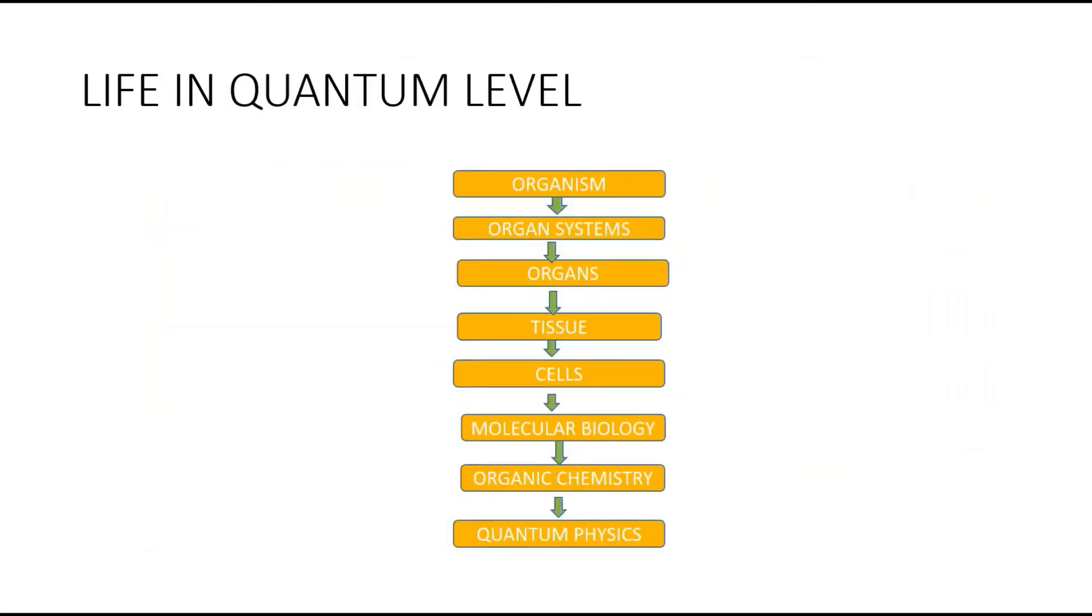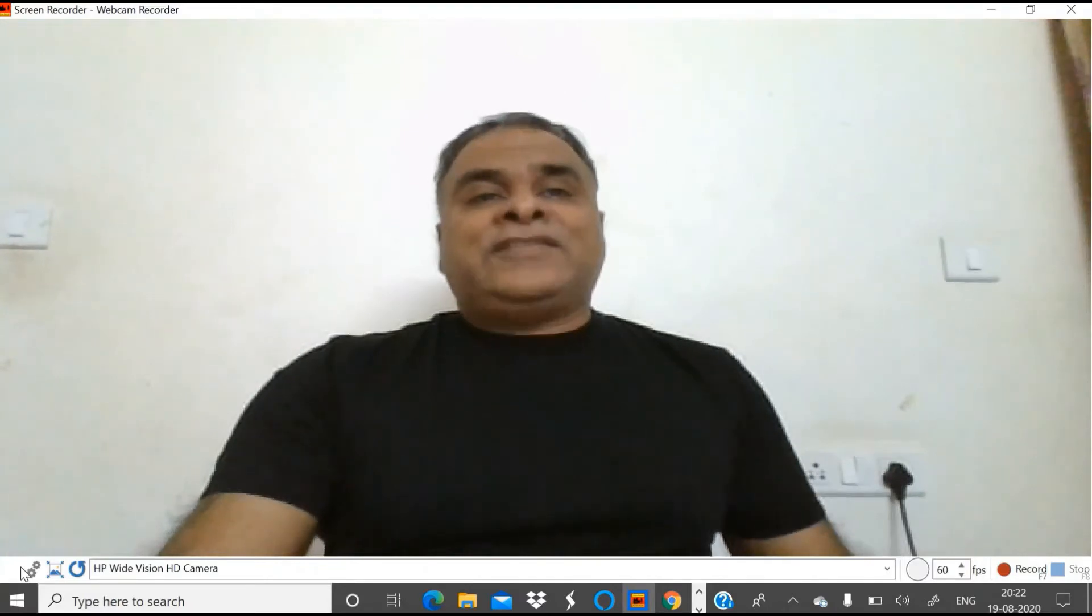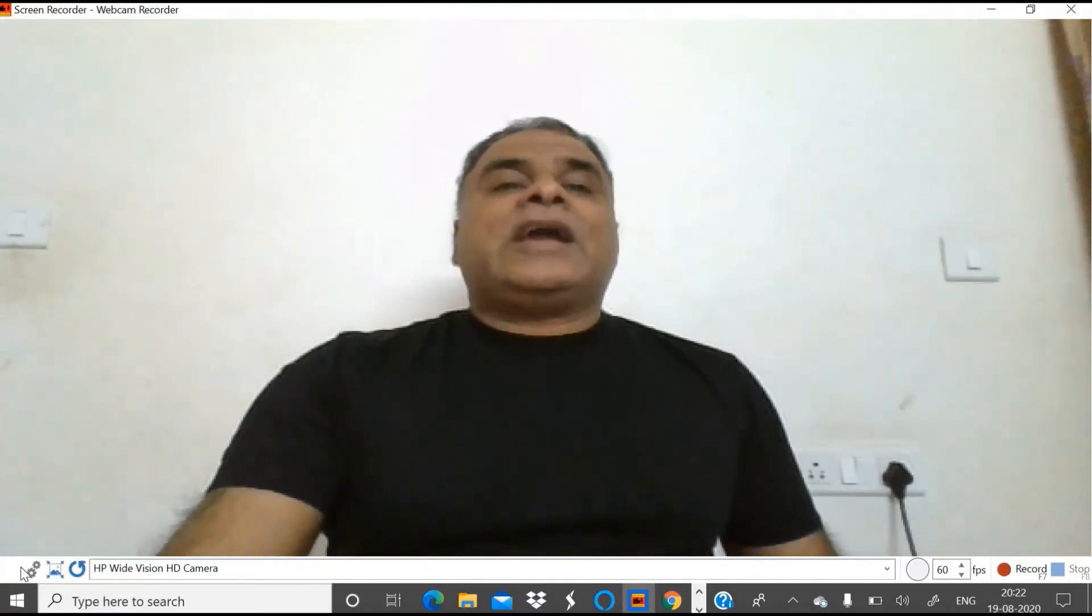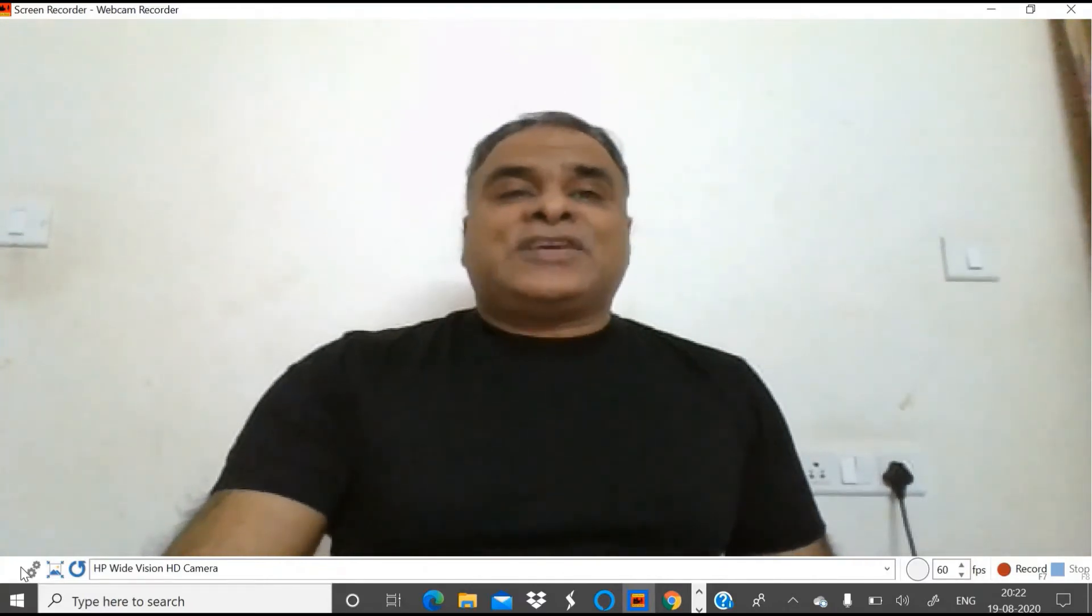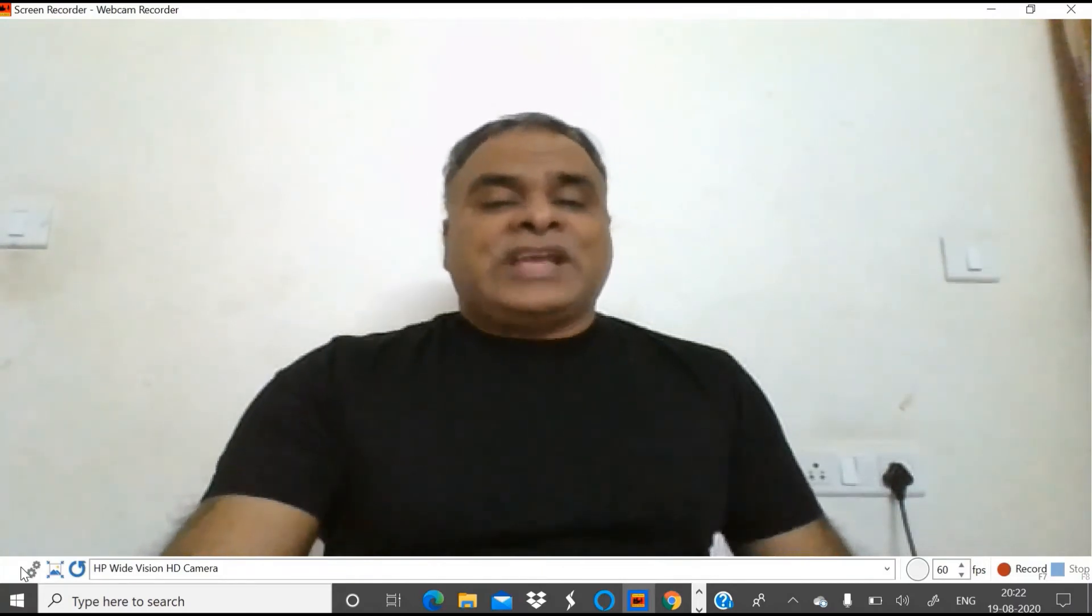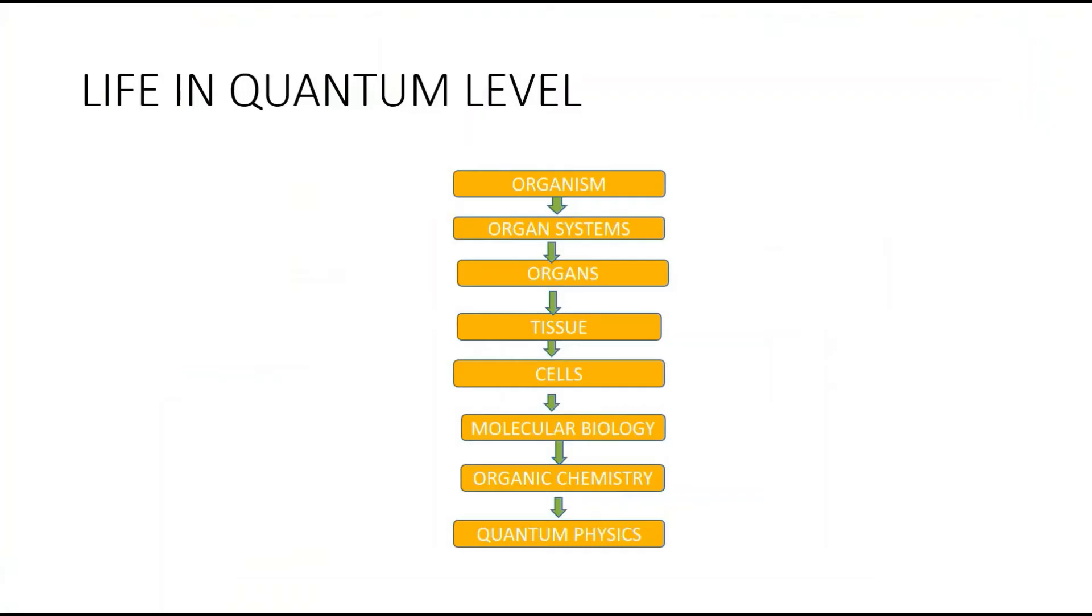So this is life in the quantum level. It consists of organisms, then our organ systems, then organs, tissues, cells, which interact. We can explain this in molecular biology. Then for further explanation, we need organic chemistry.